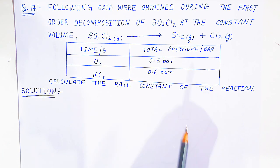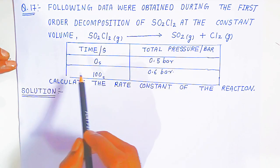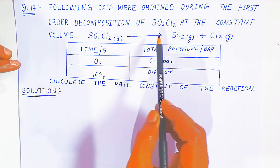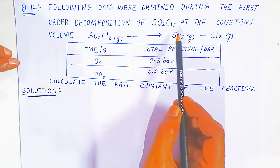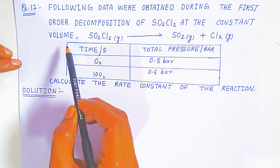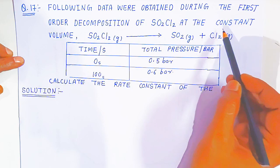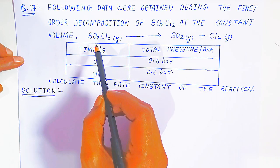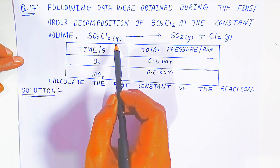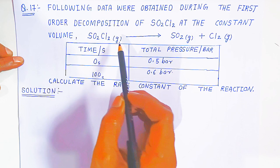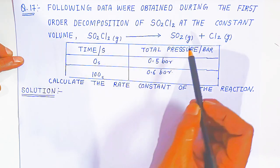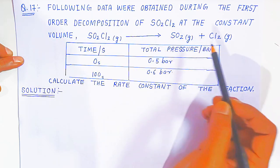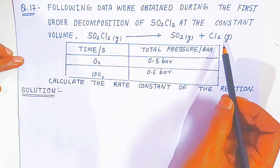In question 17, the following data were obtained during the first order decomposition of thionyl chloride at constant volume. The thionyl chloride gas decomposes to form sulphur dioxide gas and chlorine gas.